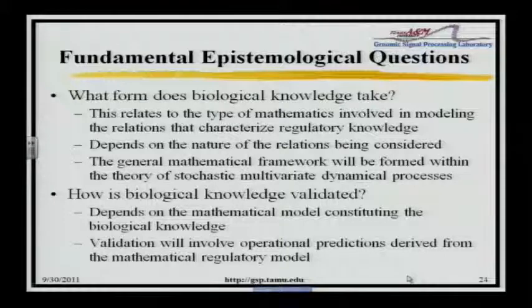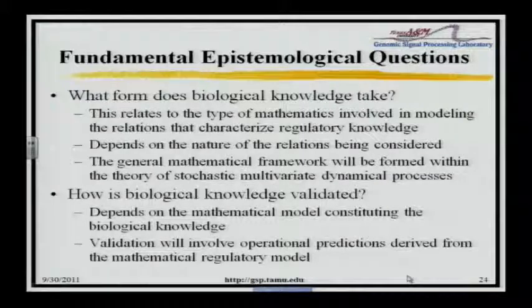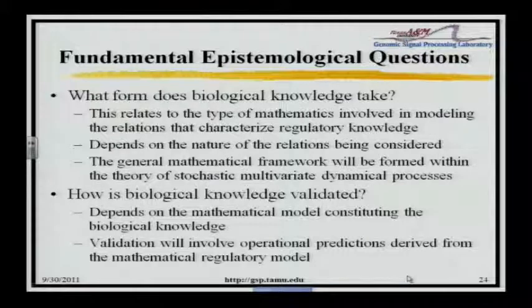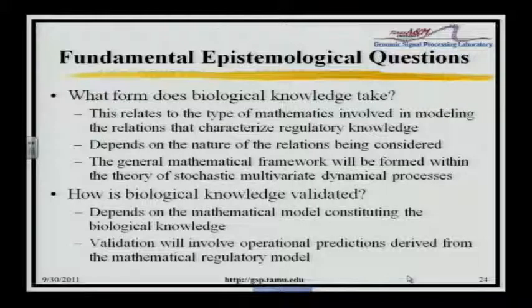How is biological knowledge validated? It depends upon the mathematical model constituting the biological knowledge. You have to have an ingenious experimentalist to understand the system and figure out what kind of experiments to do. Validation will involve operational predictions that arise from the mathematical regulatory model. Until I have the model, and an experimentalist who can construct the apparatus, I won't be able to validate it. If you lose the ability to construct experiments because you spend your time doing data mining, you will never be able to validate anything. The experimentalist must do experiments — that is key.